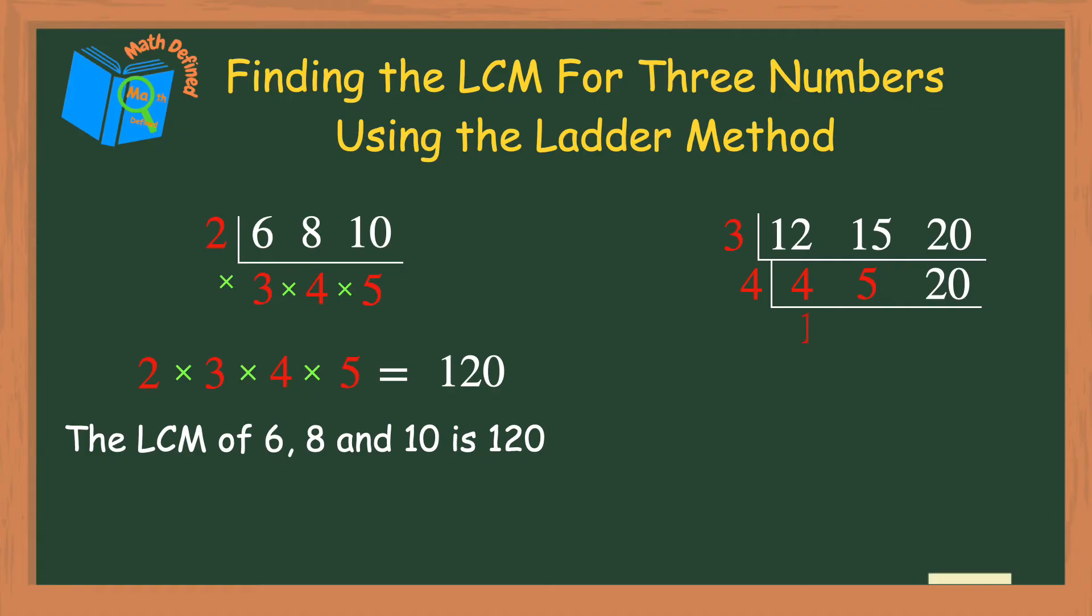4 divided by 4 is 1. 4 does not divide evenly into 5, so I just bring it down, and 20 divided by 4 is 5. Now I see that 5 divides evenly into two of my numbers inside the ladder. 5 does not divide into 1, so I bring it down.